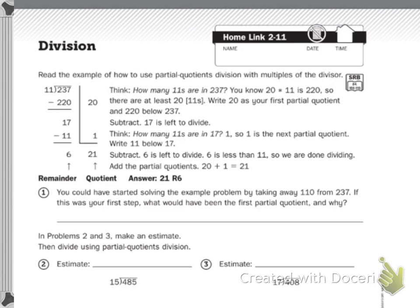So you have 237 divided by 11. Think how many 11's there are in 237. You know 20 times 11 is 220. So there are at least 20 11's. Write 20 as your first partial quotient and 220 below the 237. Subtract, 17 is left to divide.